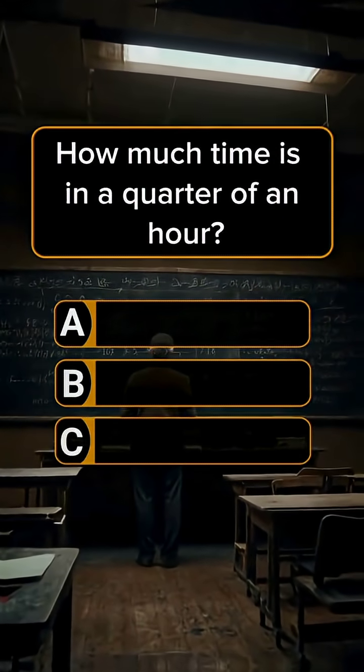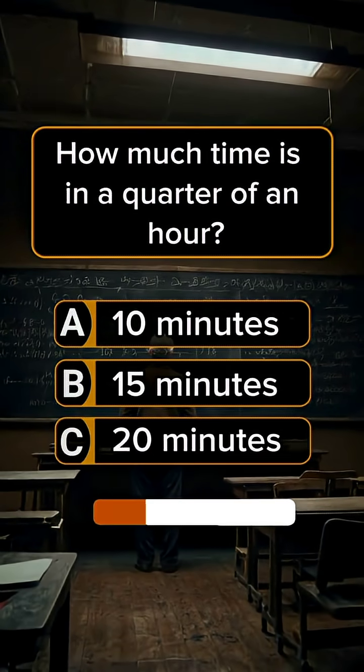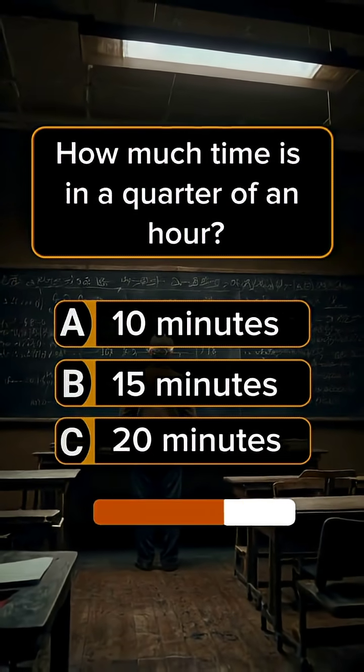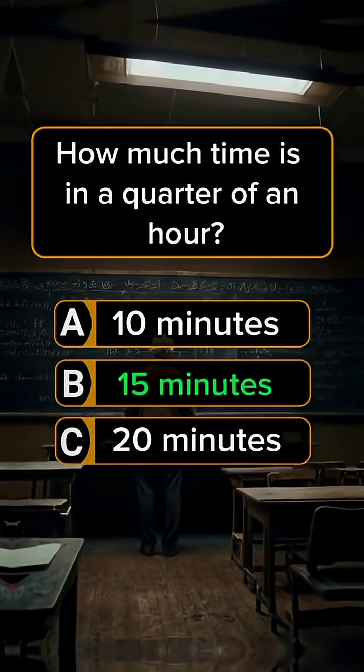How much time is in a quarter of an hour? Answer B. 15 minutes.